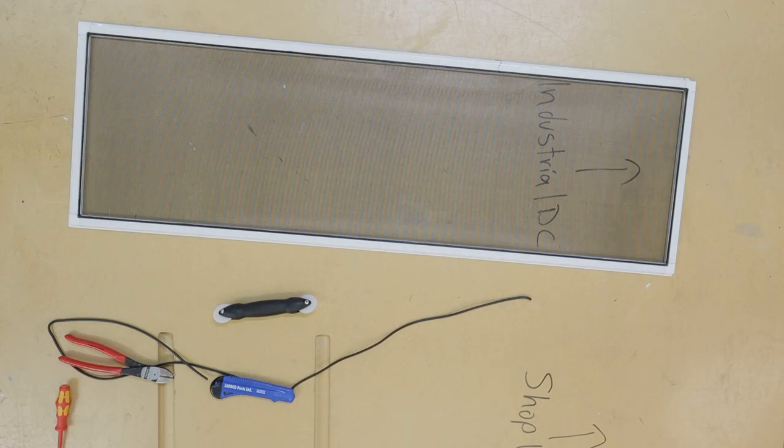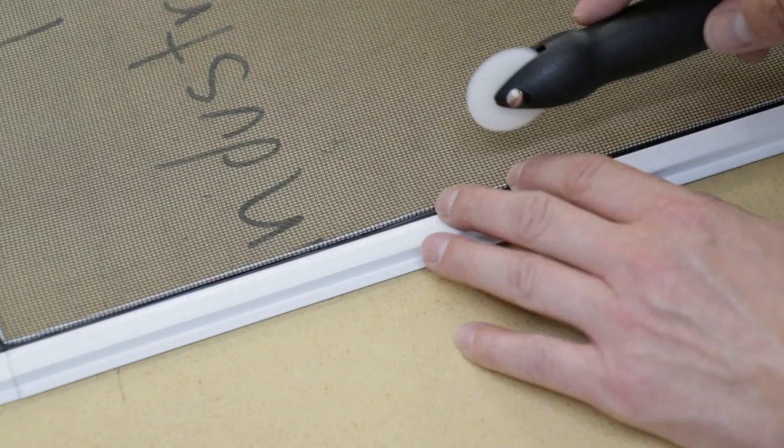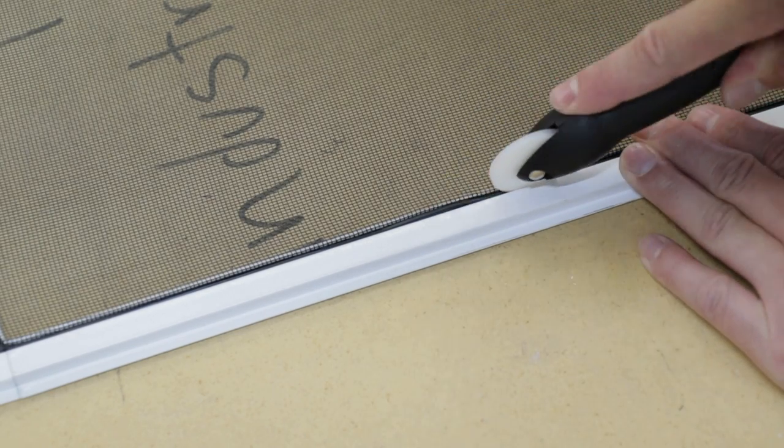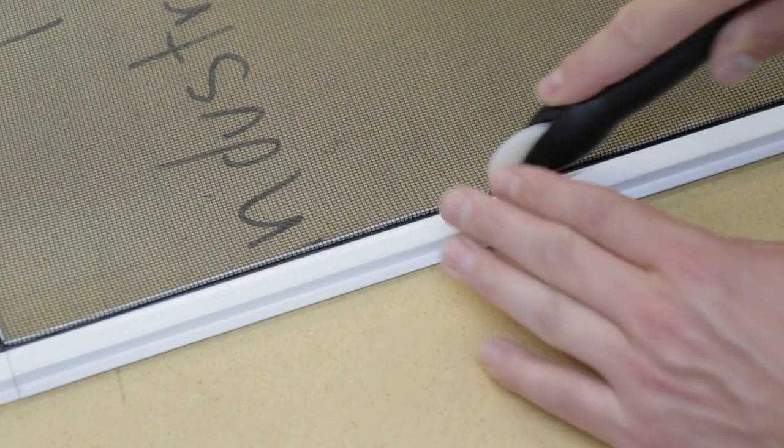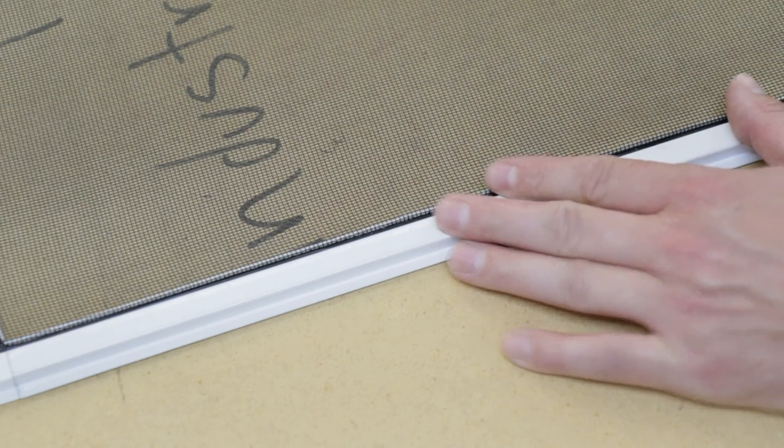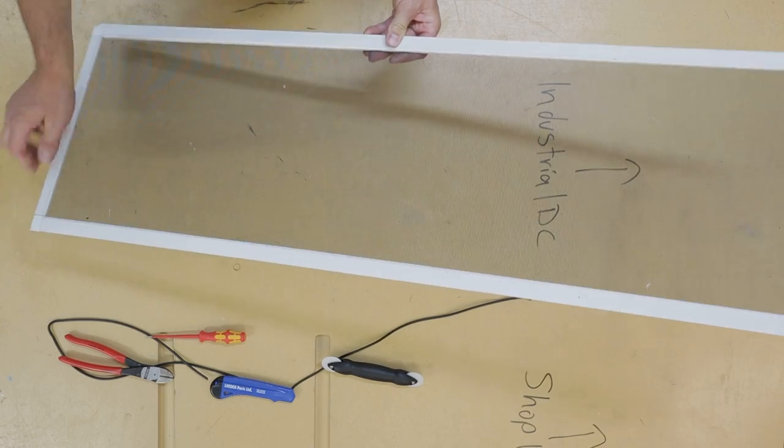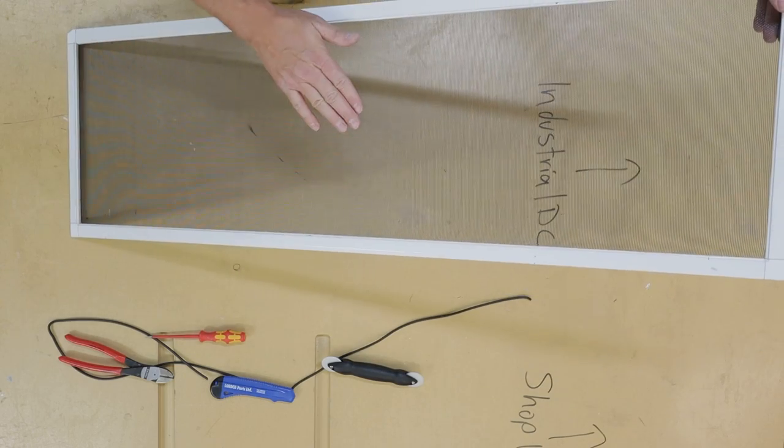Once that's all cut out, now grab the spline roller and then check out any parts that might not have gotten pushed in all the way. Grab the roller, push it in all the way, grab the flathead screwdriver, tuck on all four corners, and you're good to go. The screen is ready to install.